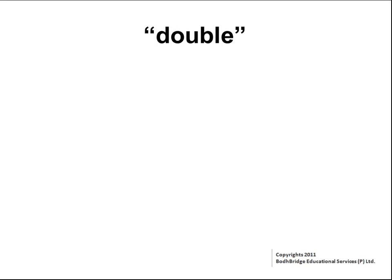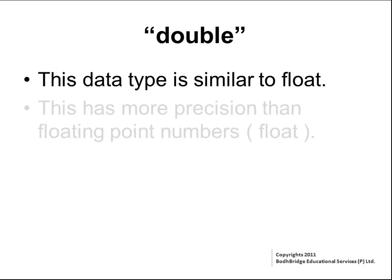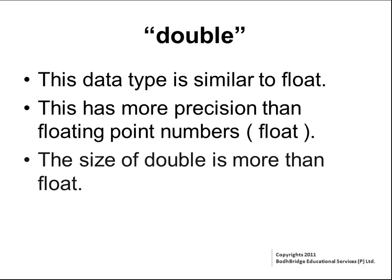Double: this data type is similar to float but has more precision. As we already learned, the precision of data in a computer is limited. Floating point has a specific precision, but if we want more precision we can use double. Generally, float is 4 bytes and double is 8 bytes.